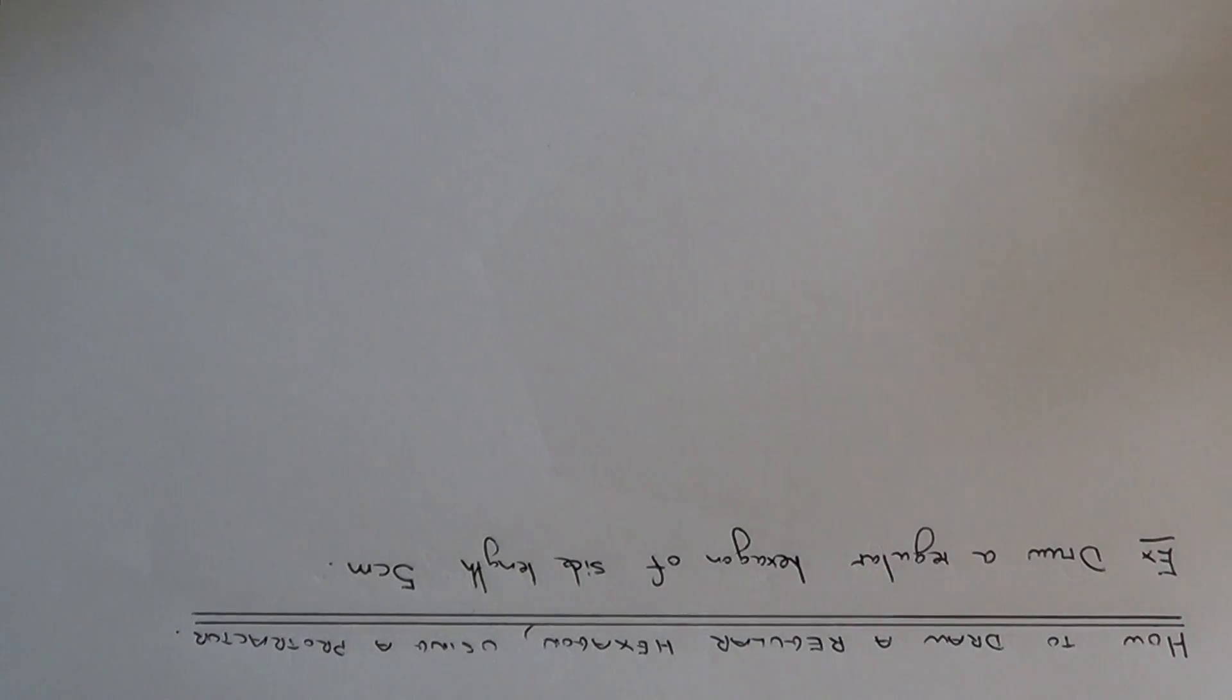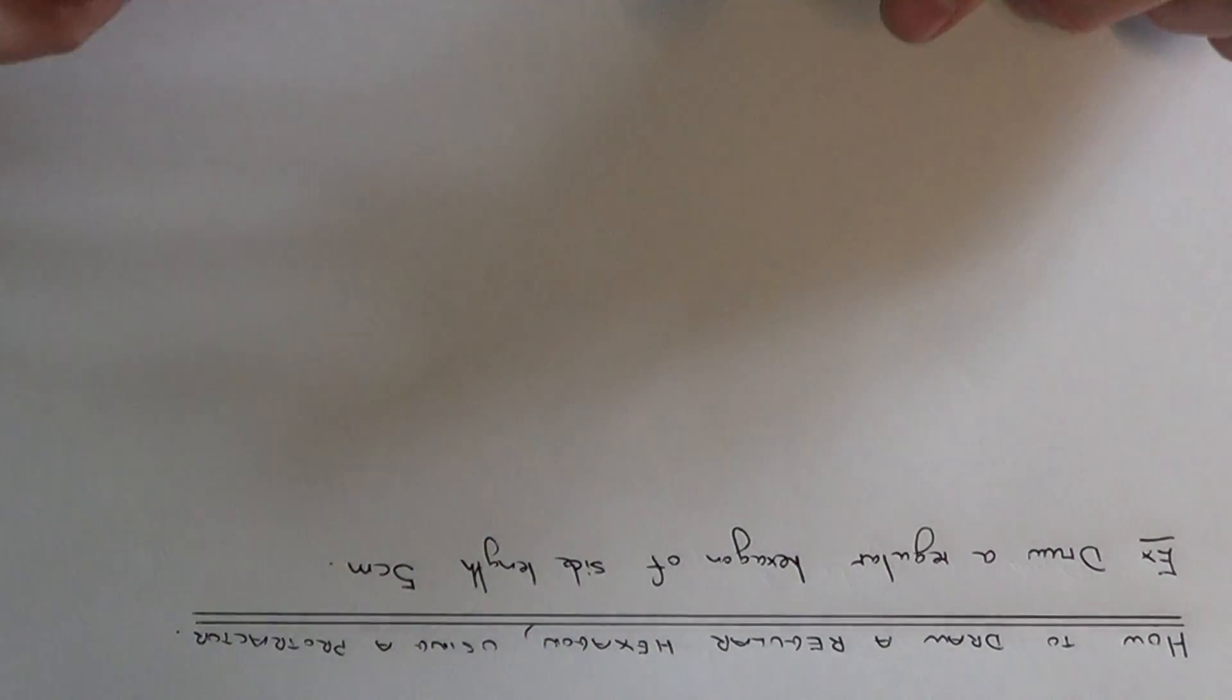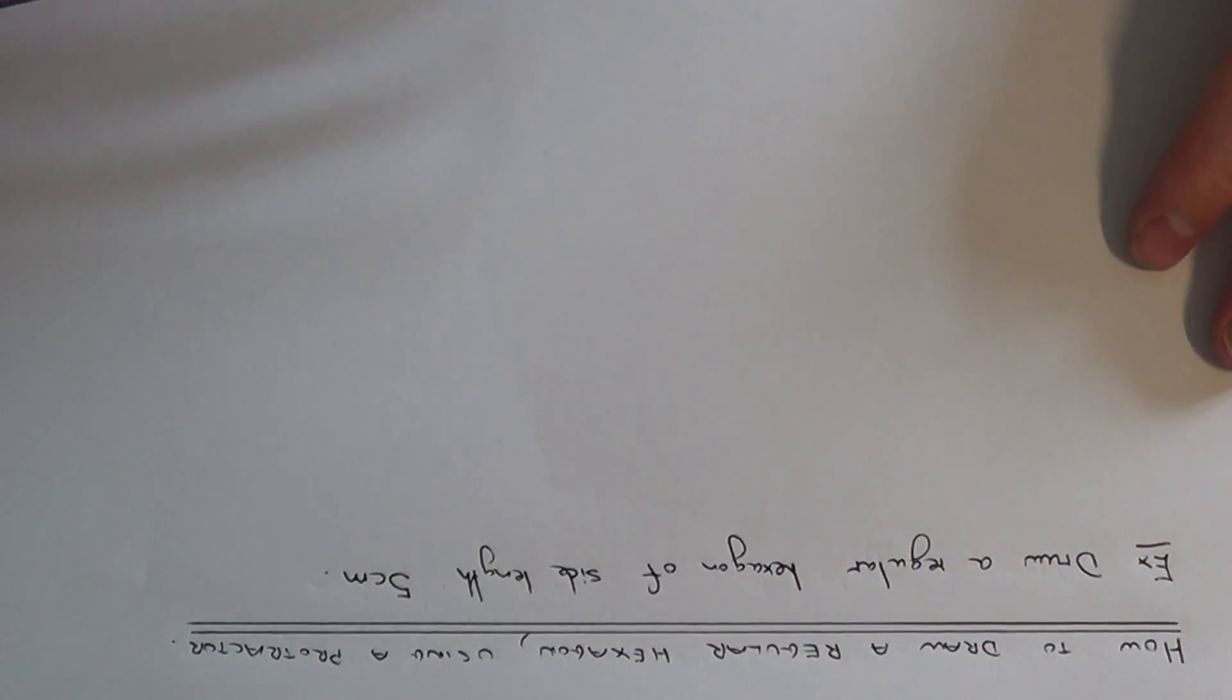But on this video we're going to use a protractor. So we're going to draw a regular hexagon of side length 5cm.